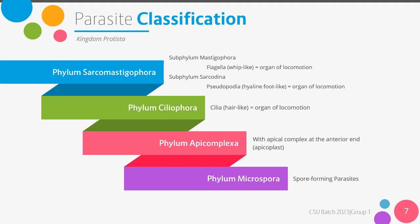Phylum sarcomastigophora branches out into subphyla, which are differentiated according to their locomotory organelle. Those under this phylum which have flagella, a web-like organelle, are under the subphylum mastigophora, while those that have pseudopodia, a hyaline foot-like organelle, are classified under the subphylum sarcodina. Phylum ciliophora includes organisms with cilia, hair-like locomotory organelles. Phylum apicomplexa is made up of organisms with an apical complex at the anterior end and contain an apicoplast, and phylum microspora, which are spore-forming parasites.